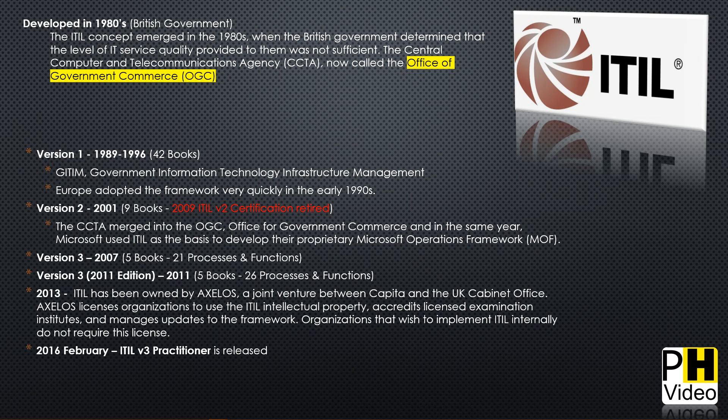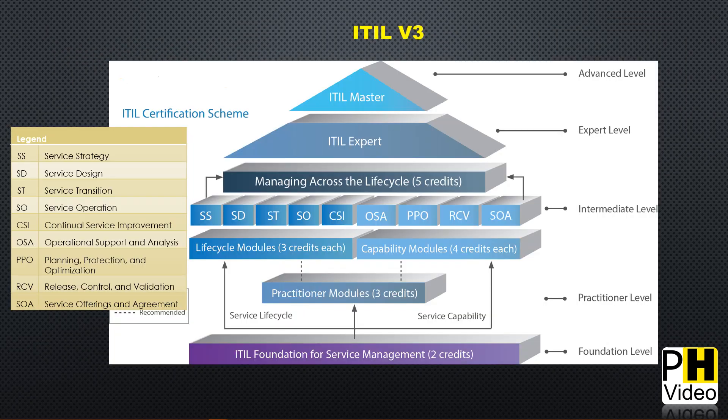Version 3's 2011 edition was the same 5 books but had some processes added, making it 26 processes and functions. In 2013, ITIL was licensed by the Office of Government Commerce to Axelos. Then in February 2016, the ITIL v3 Practitioner exam was released as part of the ITIL v3 certification methodology.